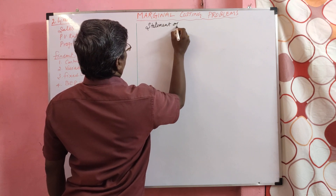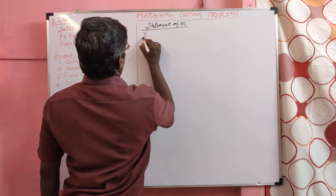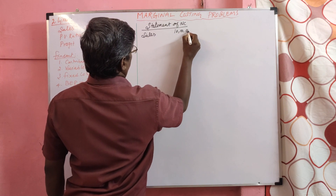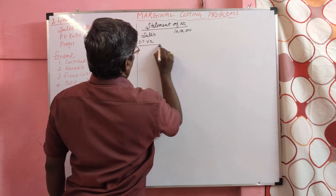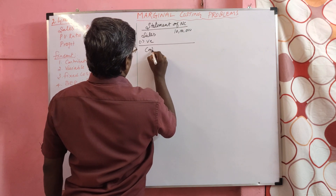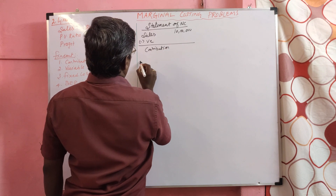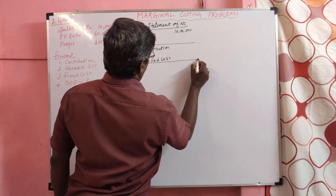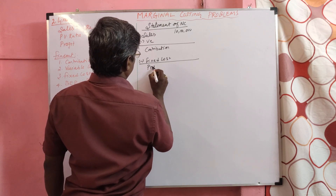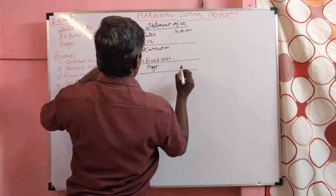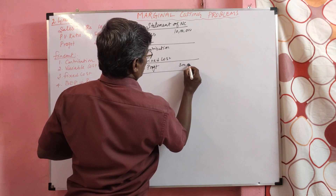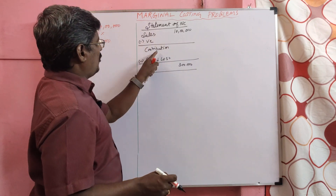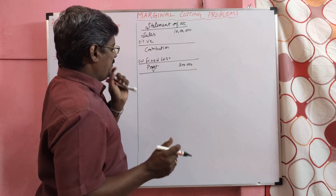Statement of marginal costing format: Sales — 10 lakh. Minus variable cost — not given. Contribution — not given. Minus fixed cost — not given. Profit — given, 3 lakh rupees. Sales are given, variable cost not given, contribution not given, fixed cost not given, profit given.